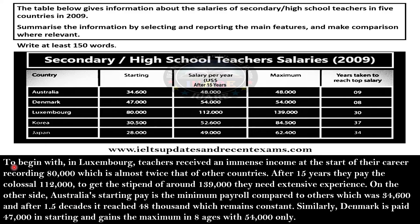Body Paragraph 1: In Luxembourg, teachers received an immense income at the start of their career, recording 80,000, which is almost twice that of other countries. After 15 years their pay is close to 112,000, and to get the top figure of around 139,000 they need extensive experience. Australia's starting pay is the minimum compared to others at 34,600; after 15 years it reaches 48,000 and remains constant. Similarly, Denmark starts at 47,000 and reaches a maximum of 54,000 after 8 years.